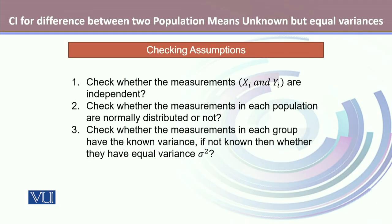So we have to check three assumptions. The first is whether the two samples are independent or not. Secondly, we check whether the two samples belong to populations that follow the normal probability distribution, and thirdly, whether the measurements in each group have known variance, and if not known, whether they have equal variances or not.